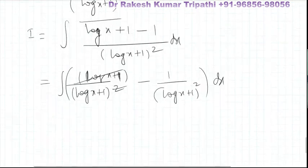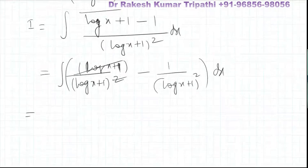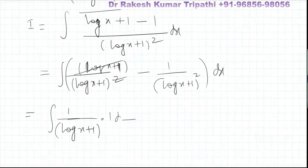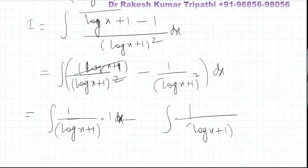The first integral, one upon (log(x) + 1), can be written as one upon (1 + log(x)) — same thing — times one, minus one upon the second integral, (log(x) + 1) whole squared dx.